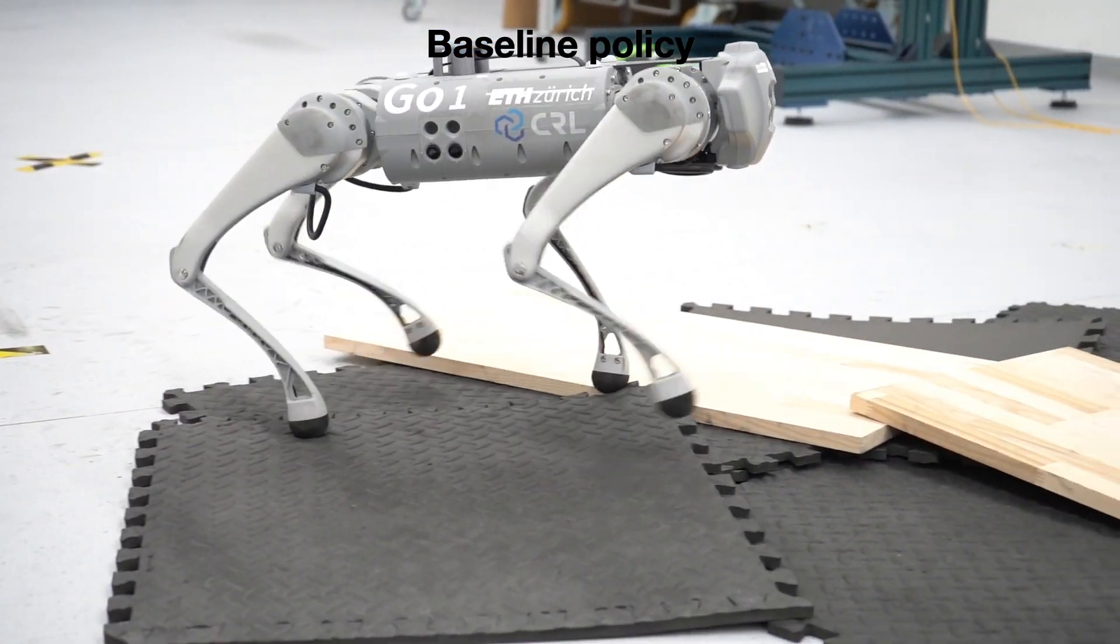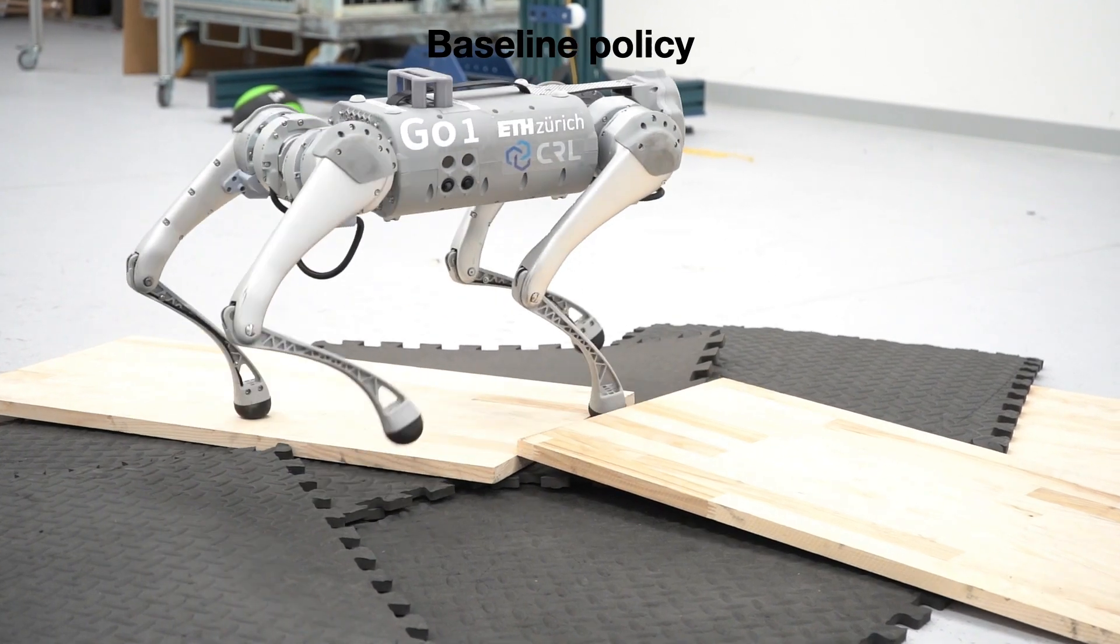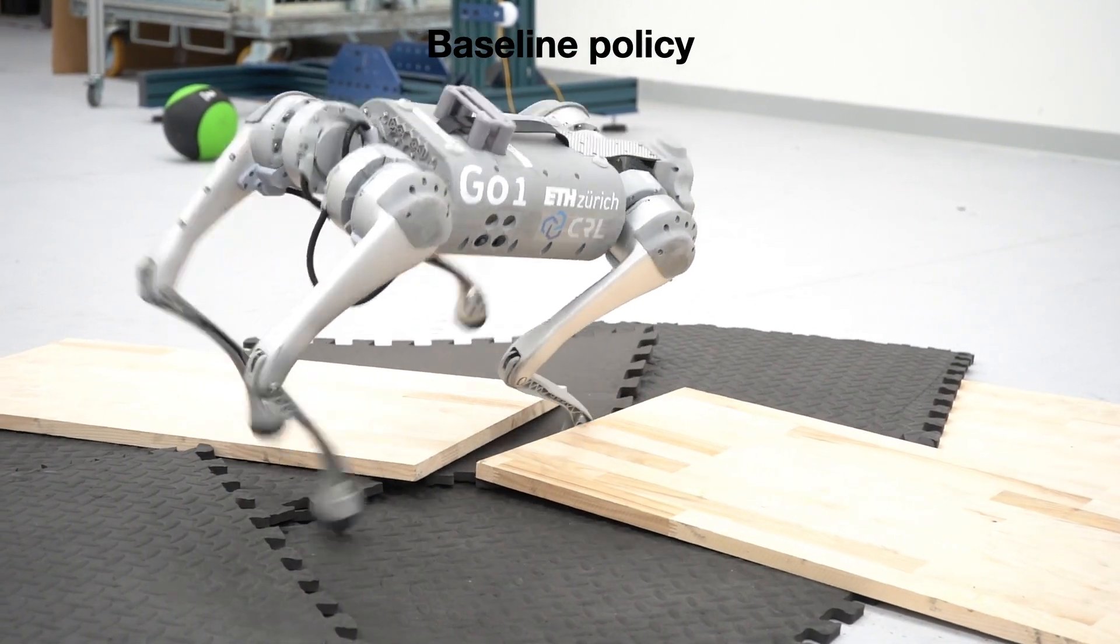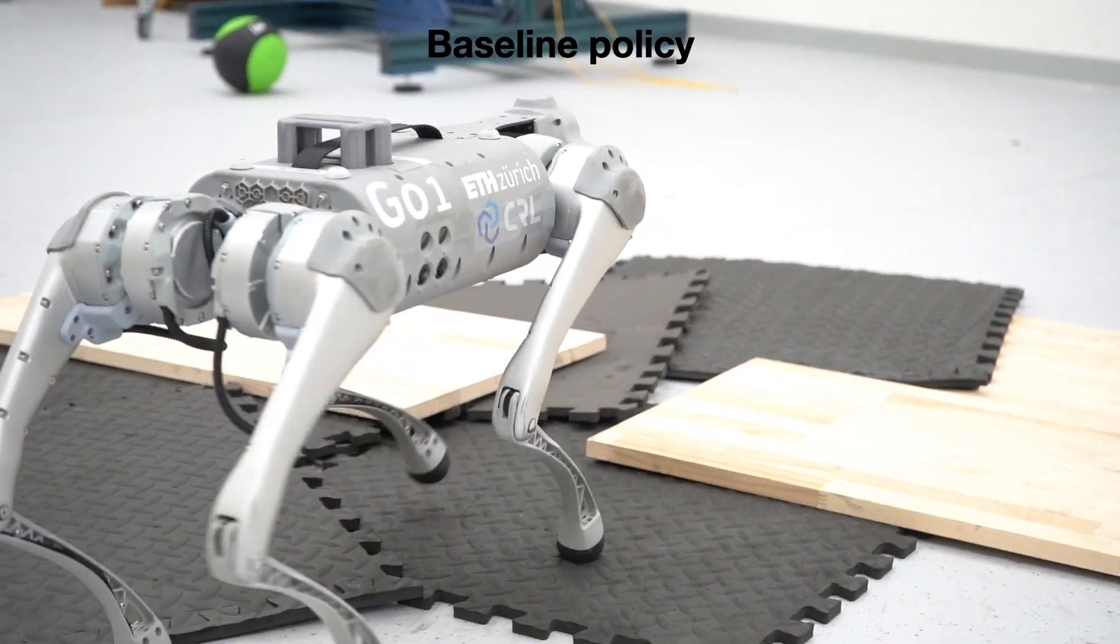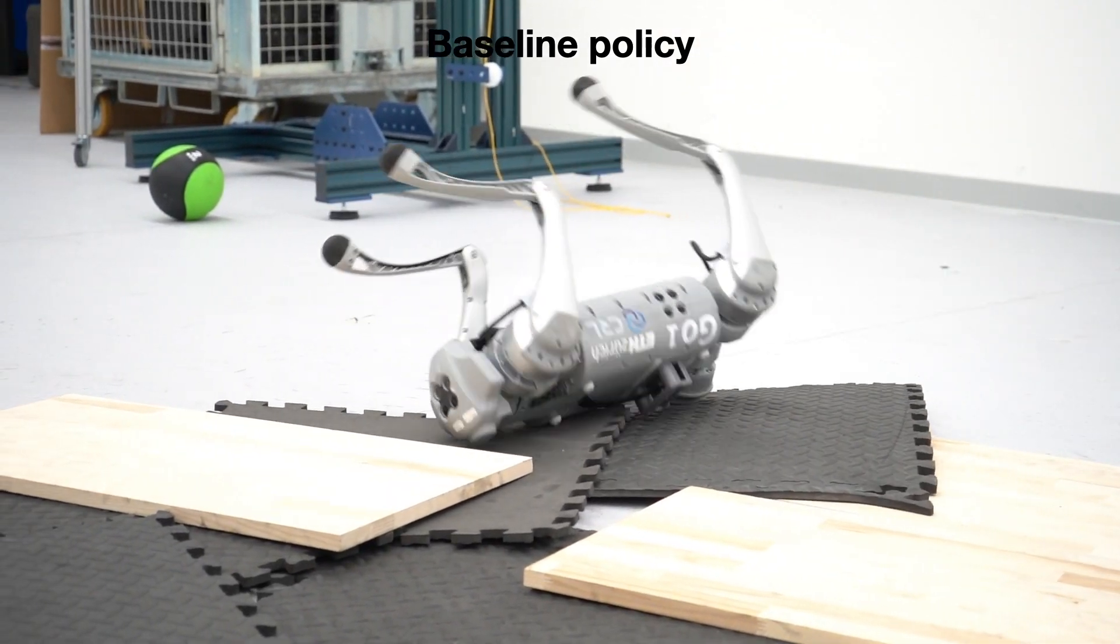In another test, we placed the robot in an environment littered with wooden blocks and soft mats. Aligning with our simulation outcomes, the baseline policy struggled to overcome the obstacles and exhibited stiffer and more aggressive reactions in challenging conditions.